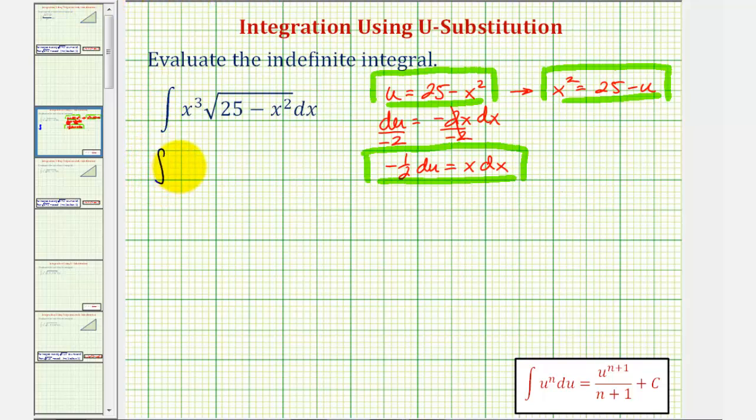the integral of x times x squared—there's our x cubed. And let's write the square root of 25 minus x squared as the quantity 25 minus x squared to the one-half dx.